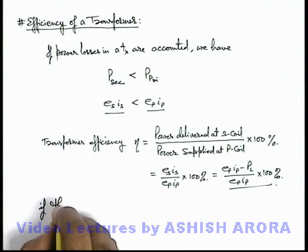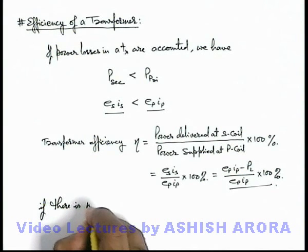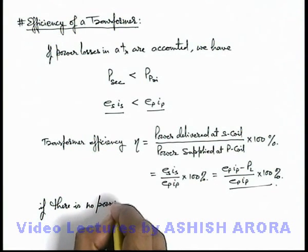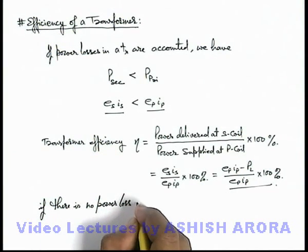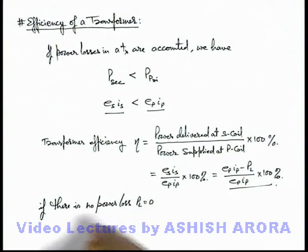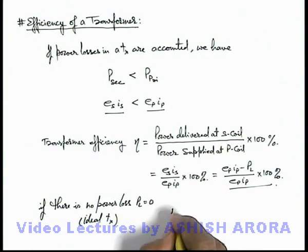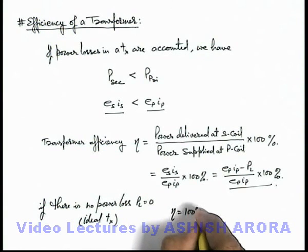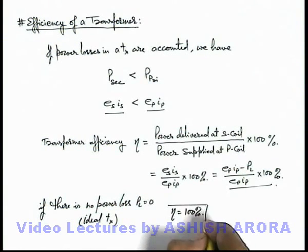And if there is no power loss, we can directly write that in case of power losses being zero, or for an ideal transformer, the efficiency will be 100 percent. Whatever power is supplied to the primary coil will be delivered as is at the secondary coil of the transformer.